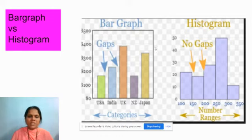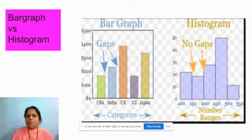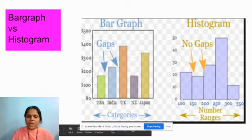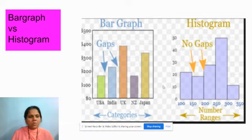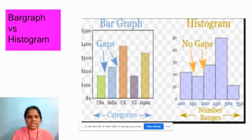A bar graph has gaps between the bars, whereas a histogram has no gaps between the bars. The equal width of the bars represents equal class interval. So from now onwards, we should be able to identify easily what is a bar graph and what is a histogram just by looking at it.